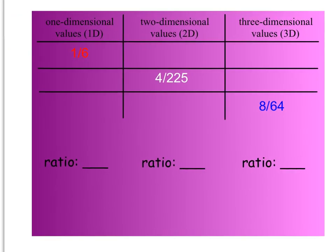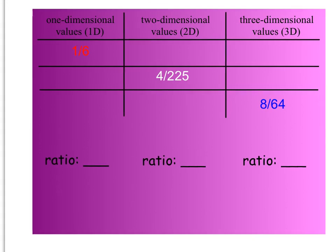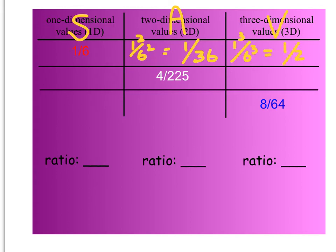Okay, I just wanted to touch on this here. We could go from a side, which is one-dimensional, to an area, which is two-dimensional, and then the volume, which is three-dimensional. We learned yesterday that we could take one-sixth and square it, so one-squared over six-squared, and the ratio of the areas of whatever this object solid might be would be one over 36. The ratio of their volumes, their three-dimensional dimension, would be one-cubed over six-cubed, which would be one to 216.